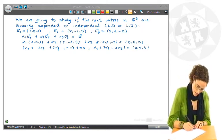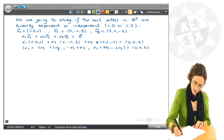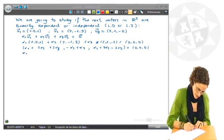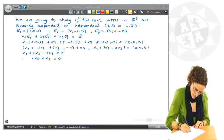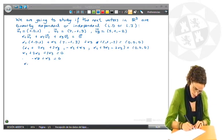If I make the first component equal 0, we get α1 plus 2α2 plus 5α3 equals 0, and α1 plus 3α2 minus 2α3 equals 0.